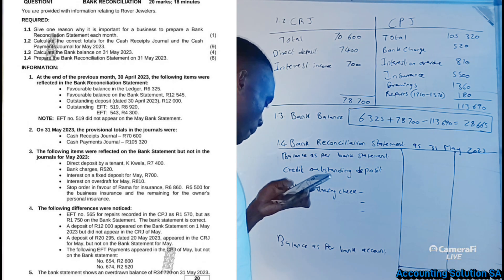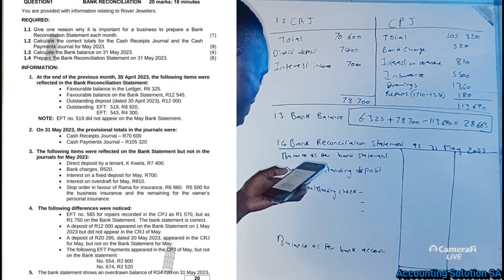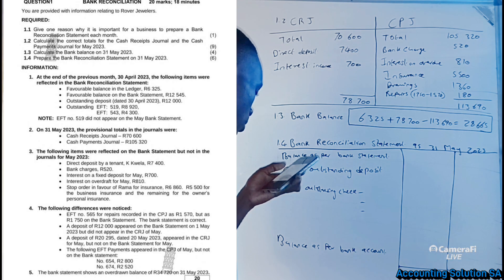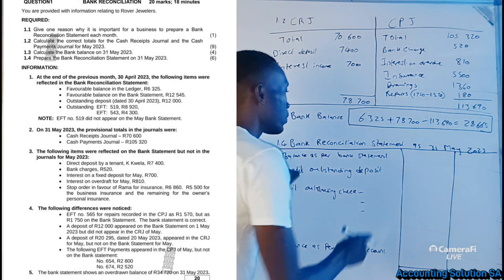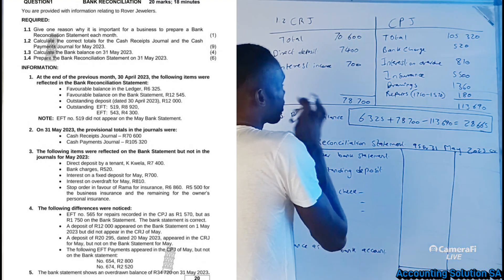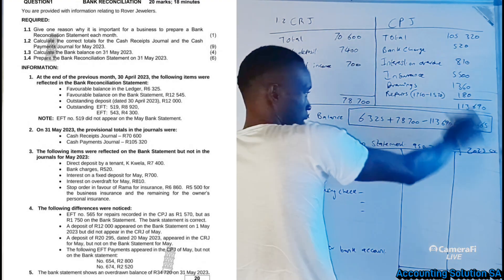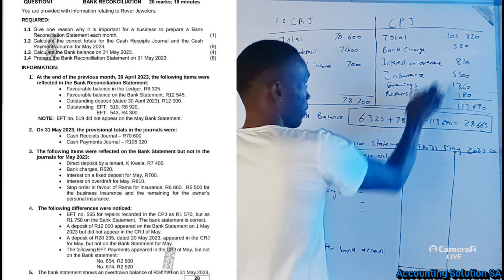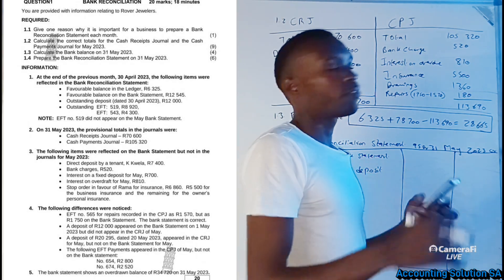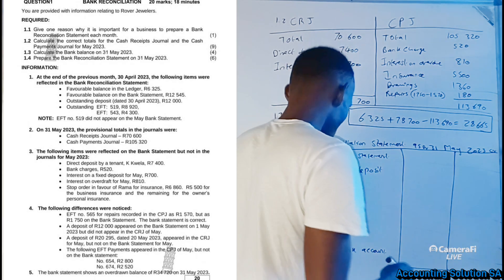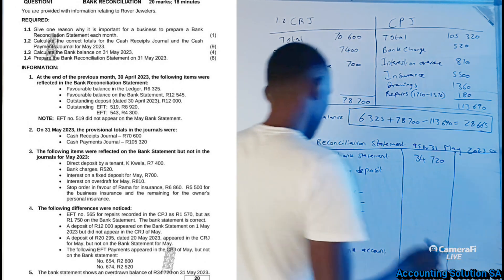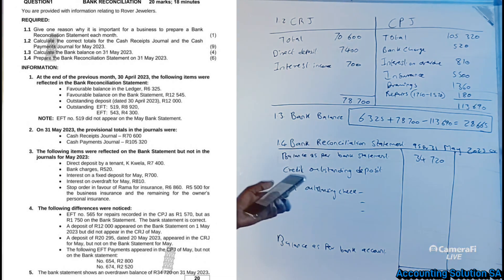The bank statement shows an overdrawn balance of R34,720. Because it is overdrawn, it comes on the debit side — remember, cash receipts are recorded on the credit side, and when it comes to the reconciliation, cash payments are on the debit side. Since it is overdrawn, meaning it is negative and we owe, it goes on the debit side as R34,720. If it were favorable it would go on the credit side.